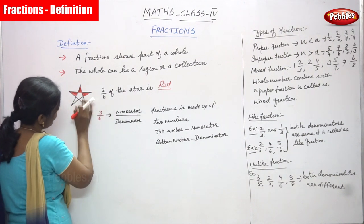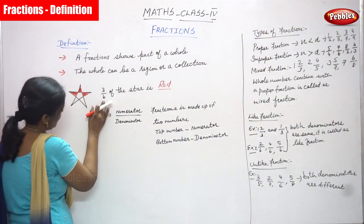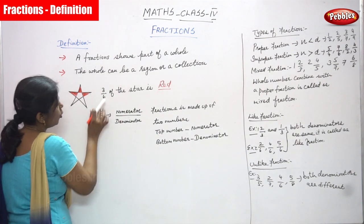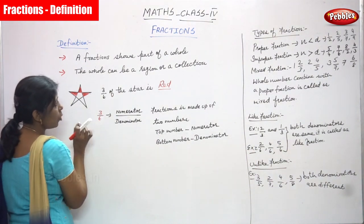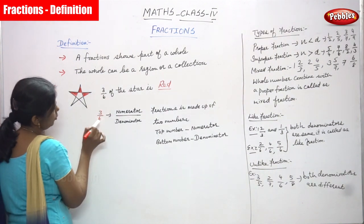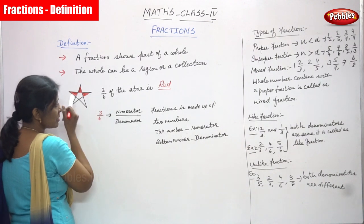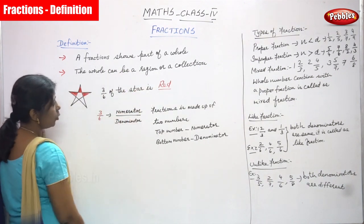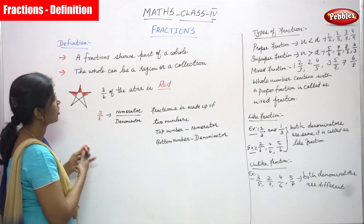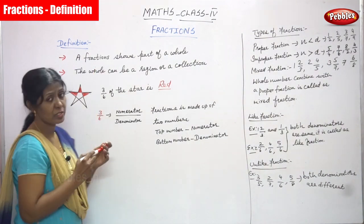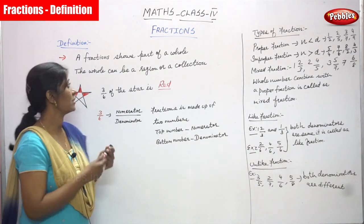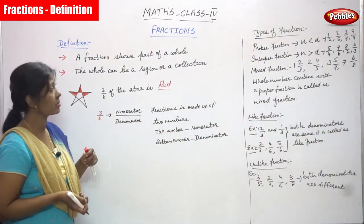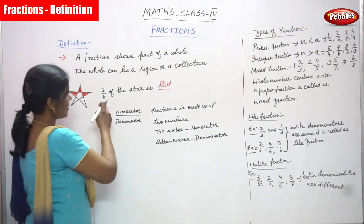The shaded portion is only three. So that is called a fraction — it shows a part of a whole. The total divided parts are six, but the shaded portion is only three. So the fraction three by six means three is a part of the whole, and the whole is six parts. Three by six of the star is red in color.